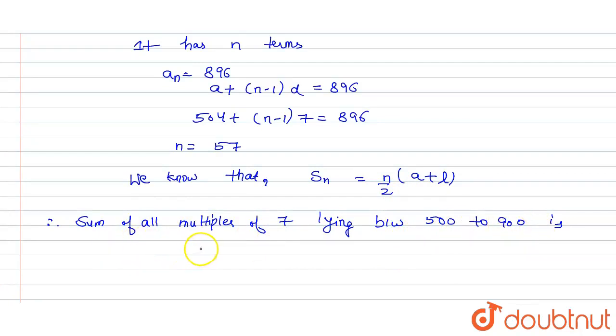Then SN will be, N is 57, so 57 by 2, A is 504 plus L is 896.